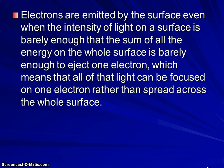Now, electrons are emitted by the surface even when the intensity of the light is barely enough that the sum of all the energy on the whole surface is barely enough to eject one electron. So that means that all that light can be focused onto one electron rather than spread across the whole surface.